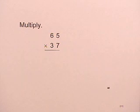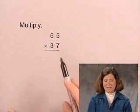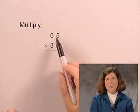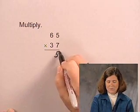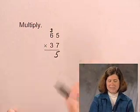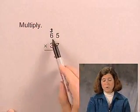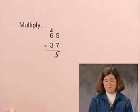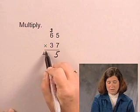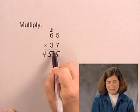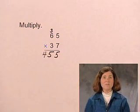In order to do this, we'll first multiply 65 by 7. 7 times 5 is 35. Write the 3 above the 6. 7 times 6 is 42, plus the 3 is 45. So we have that 7 times 65 is 455.